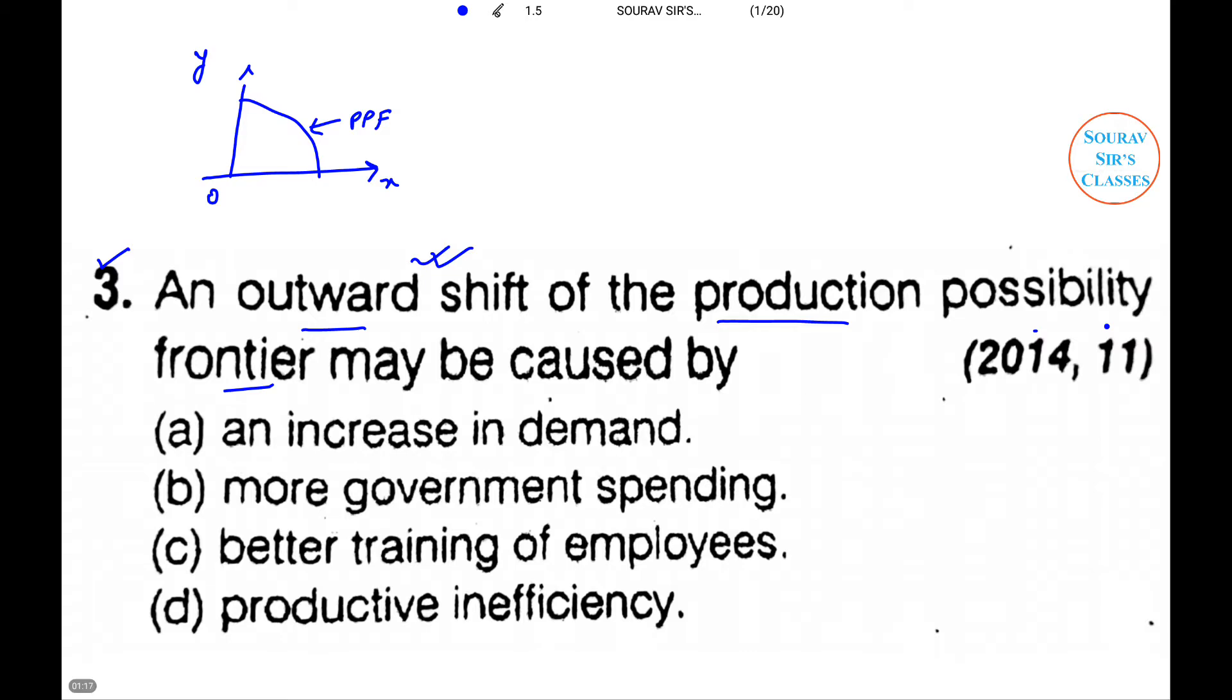There is an outward shift which may be caused by: an increase in demand, increase in government spending, better training of employees, and productive inefficiency. This is definitely not the case. Now I need to pick the most appropriate one among these options. So according to me, C will be the most appropriate.